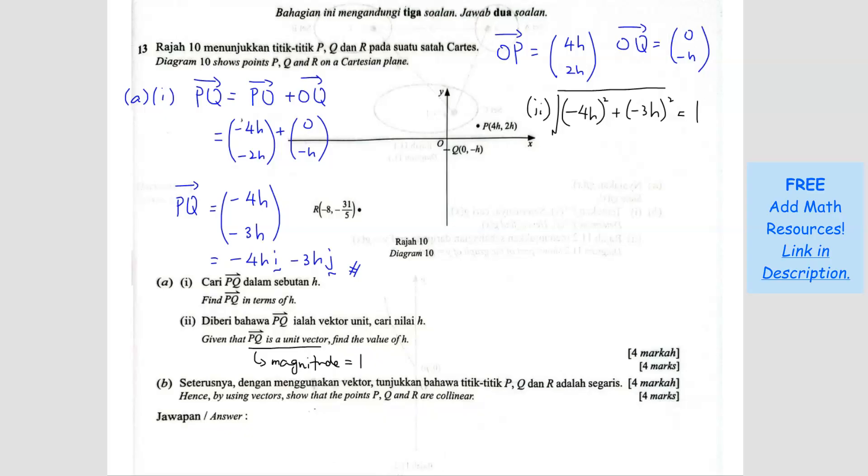Bring the square root to the other side, it becomes square. And then we expand the inside here. So we have negative 4H squared, you get 16H squared. And this one gives you 9H squared. So you add this together, you get 25H squared equals to 1. H squared equals to 1 over 25. So H equals to, you square root 1 over 25, you get positive negative 1 over 5.